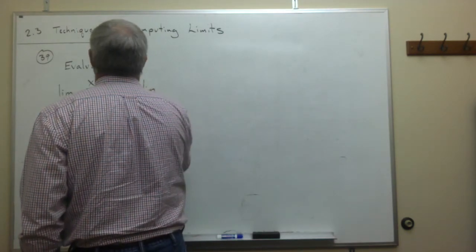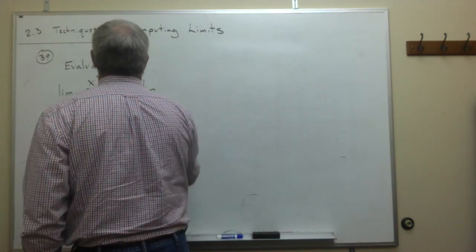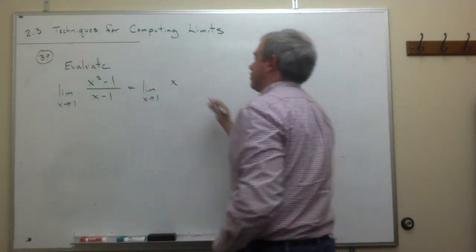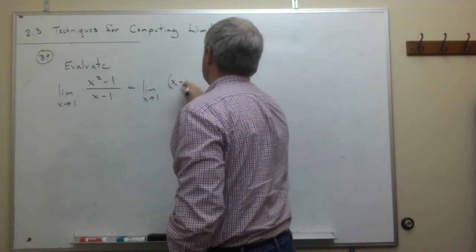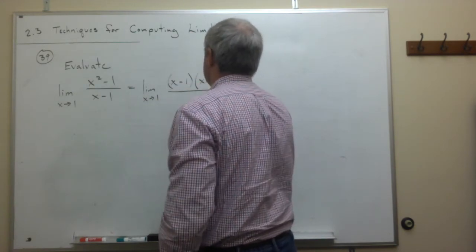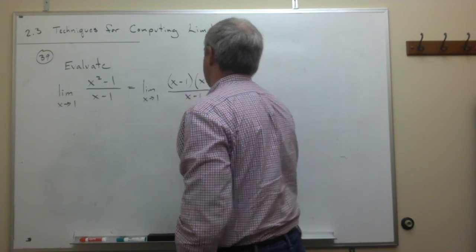I'm going to rewrite this as the limit as x goes to 1 of x squared minus 1, which factors to x minus 1 times x plus 1, divided by x minus 1.